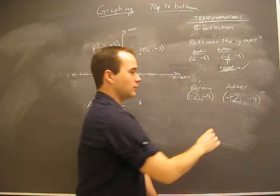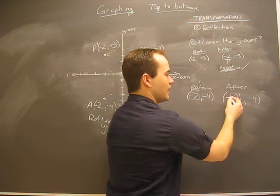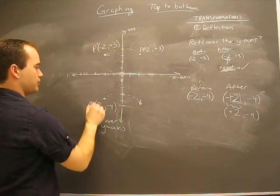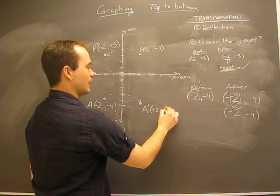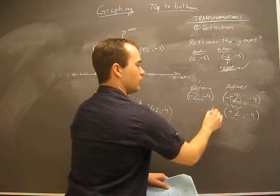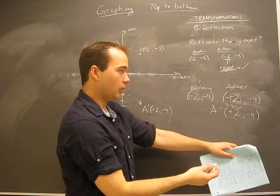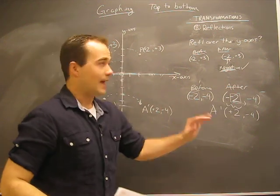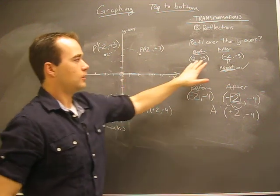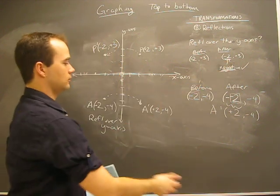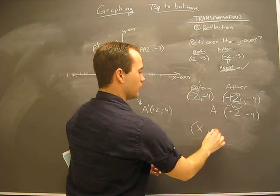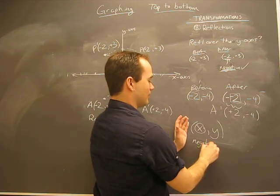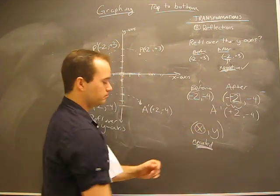Now, a negative negative two is the same as positive two — we should get used to that. So point A prime is described as (positive 2, negative 4). In either case, whether we start anywhere on the graph, anytime we reflect over the y-axis, our x-value of our ordered pair gets negated — we apply a negative sign to it. That's the rule.